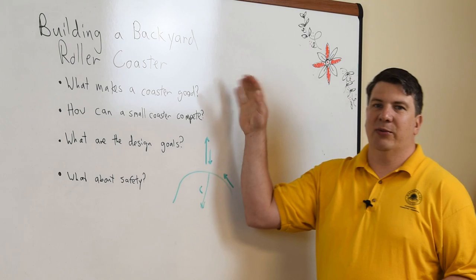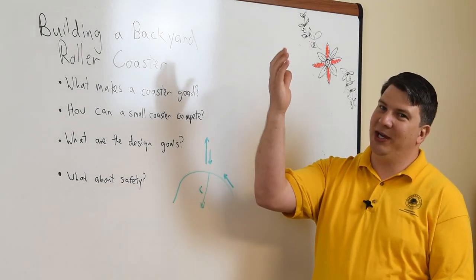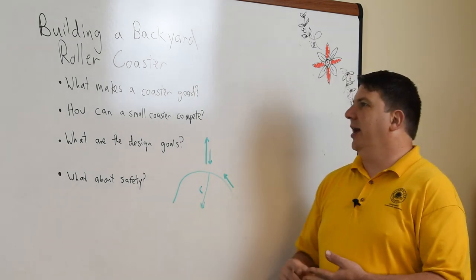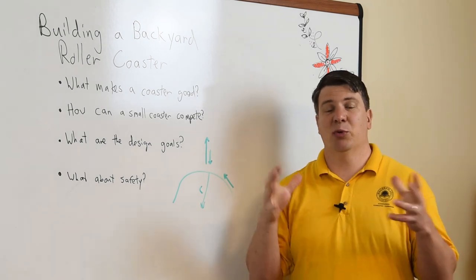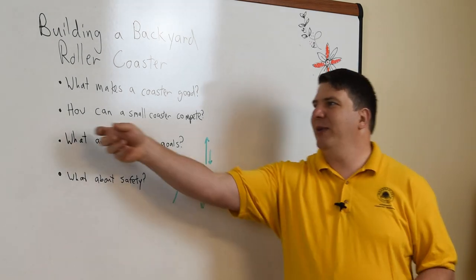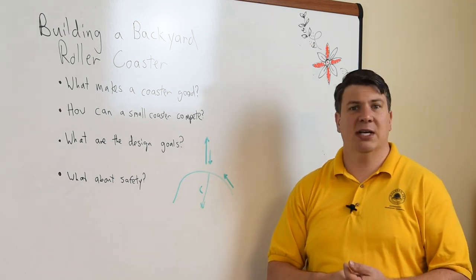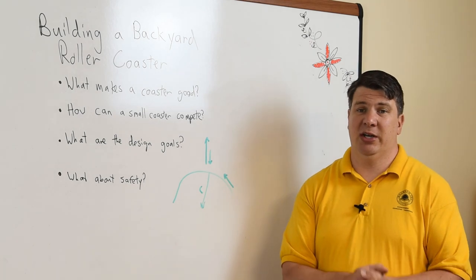Like we said, positive Gs forcing yourself further in a seat, negative Gs throwing you out of the seat, going around curves with lateral Gs, and inversions and speed. Those are what we want. So how can we make a small coaster compete with that? Well, it's actually not too hard. So let's talk about speed and how we can compete there.